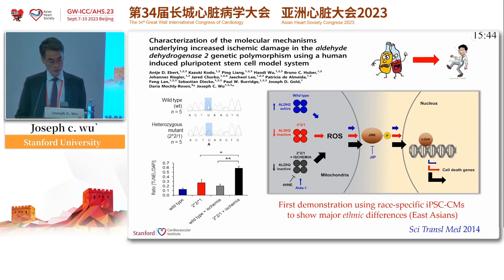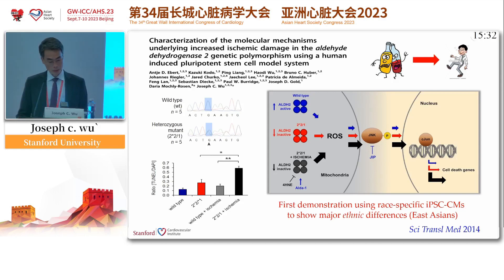So we recruited Stanford undergrads — five undergrads who could drink, and another five undergrads who are of East Asian descent but heterozygous, which means they'll have similar symptoms as I do. We generated iPSC-derived cardiomyocytes and exposed them to hypoxia.